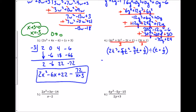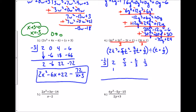I write down the coefficients: 2, 5/3, negative 2/3, and positive 1/3. I bring down the 2, then multiply: negative 1/3 times 2 is negative 2/3. Adding straight down: 5/3 plus negative 2/3 is positive 3/3, which is 1. Then negative 1/3 times 1 is negative 1/3. Adding those gives negative 3/3, which is negative 1. Then multiplying gives positive 1/3, and adding 1/3 and 1/3 gives 2/3. Working with fractions here isn't too bad because I always have common denominators.